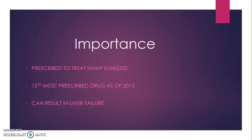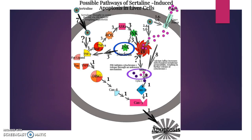Sertraline is a drug that is prescribed for depression, obsessive-compulsive disorder, panic disorders, and post-traumatic stress disorders. With so many uses, it isn't hard to see why sertraline is the 15th most commonly prescribed drug in the United States as of 2015. Although its primary effect is on the brain, sertraline has a concerning side effect on the liver. Some patients who have taken sertraline have experienced liver toxicity, even to the extent of liver failure. The exact mechanism through which sertraline causes liver toxicity is currently unknown, though three pathways have been proposed. Let's take a closer look at each of these pathways.